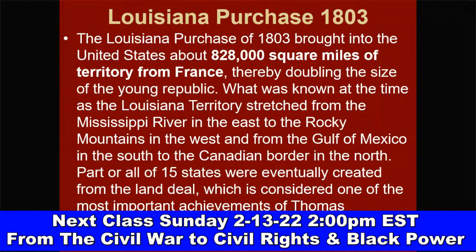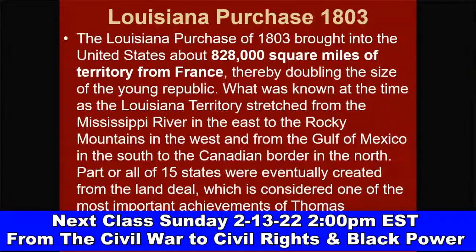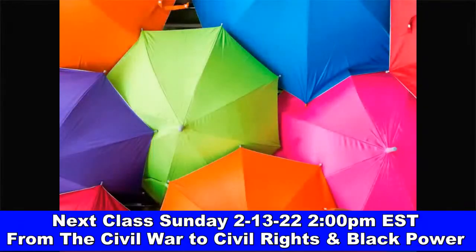The Louisiana Purchase of 1803 brought approximately 828,000 square miles of territory into the United States from France, effectively doubling the size of the young republic. This gave the U.S. more land to grow crops on and increased the need for enslaved African labor. The territory stretched from the Mississippi River in the east to the Rocky Mountains in the west, and from the Gulf of Mexico to the Canadian border. Parts or all of 15 states were eventually created from this land deal.